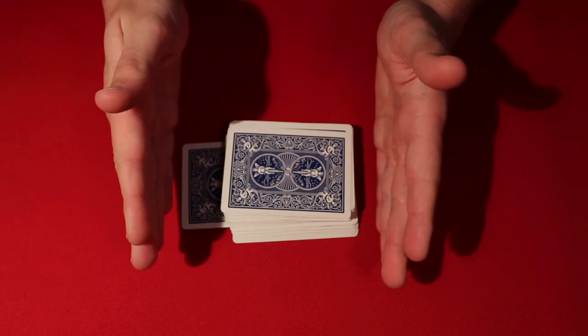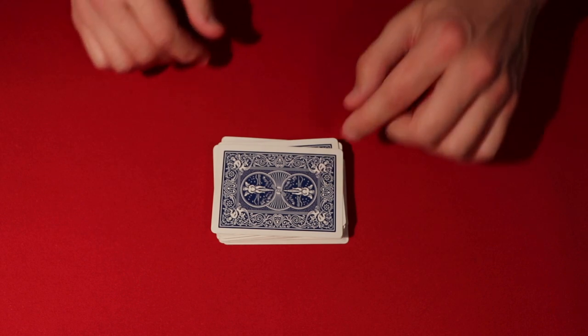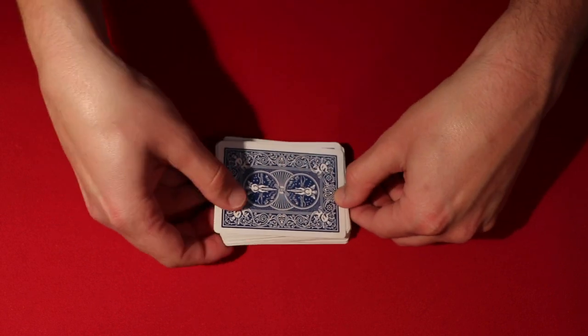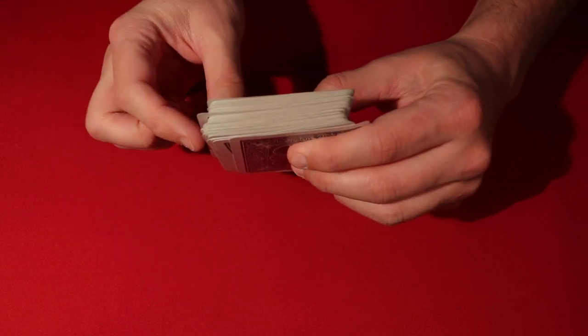And all you're going to do is hit it on the corner towards your body. So in a diagonal motion, you don't square it up like this, but you square it up like that. And essentially, that's going to out-jog that card towards you. As you can see.